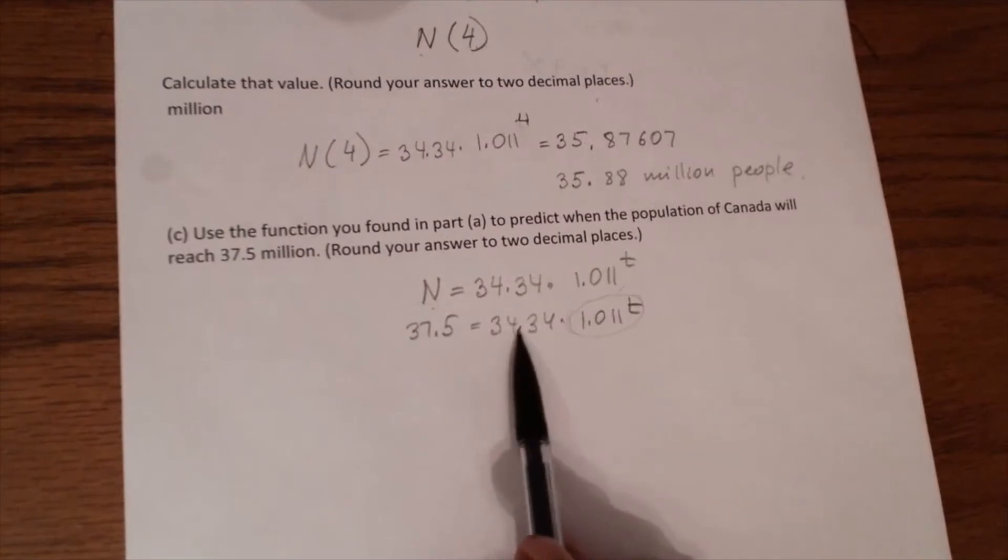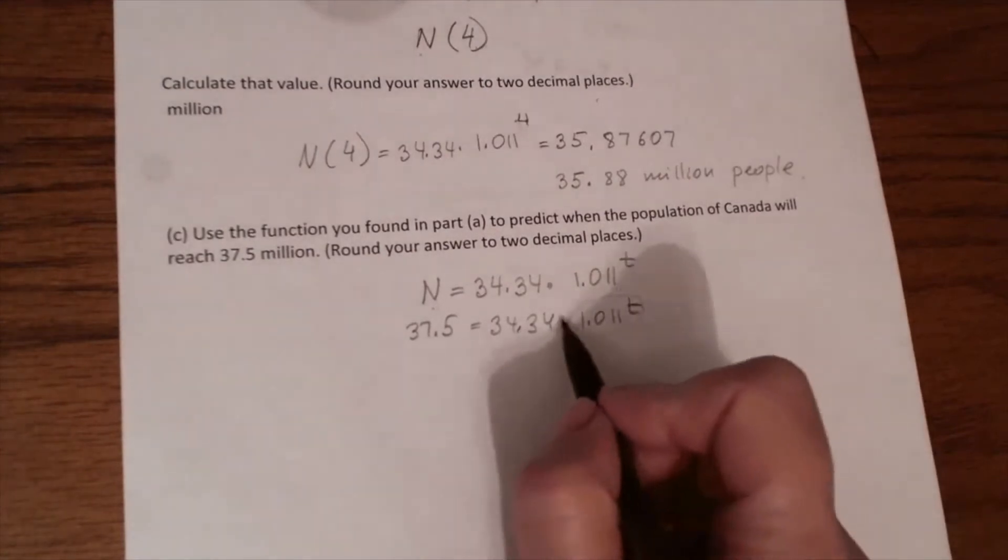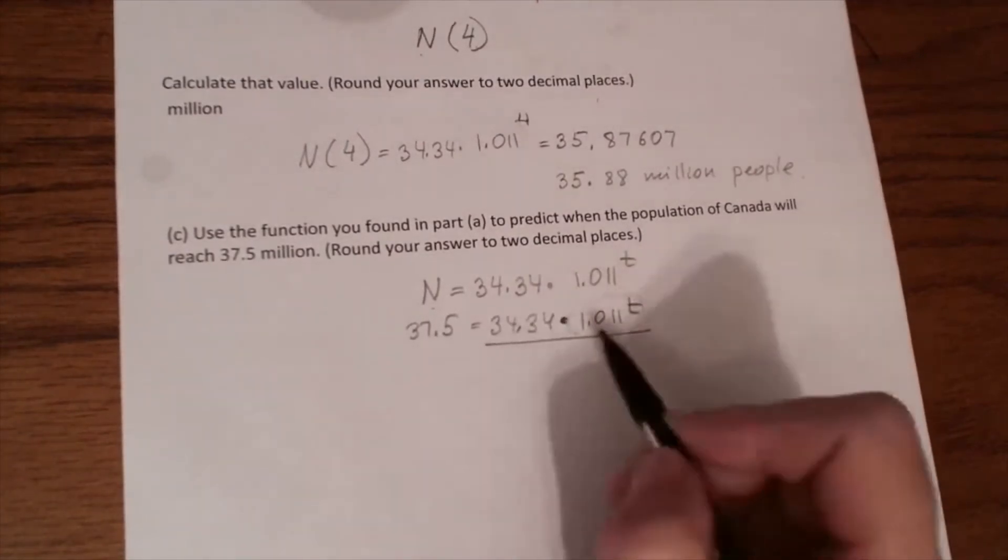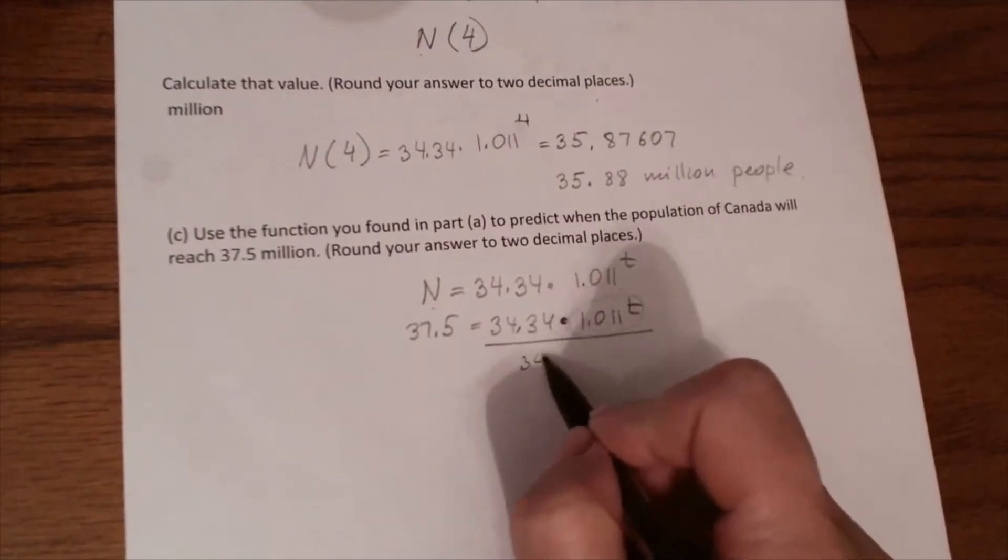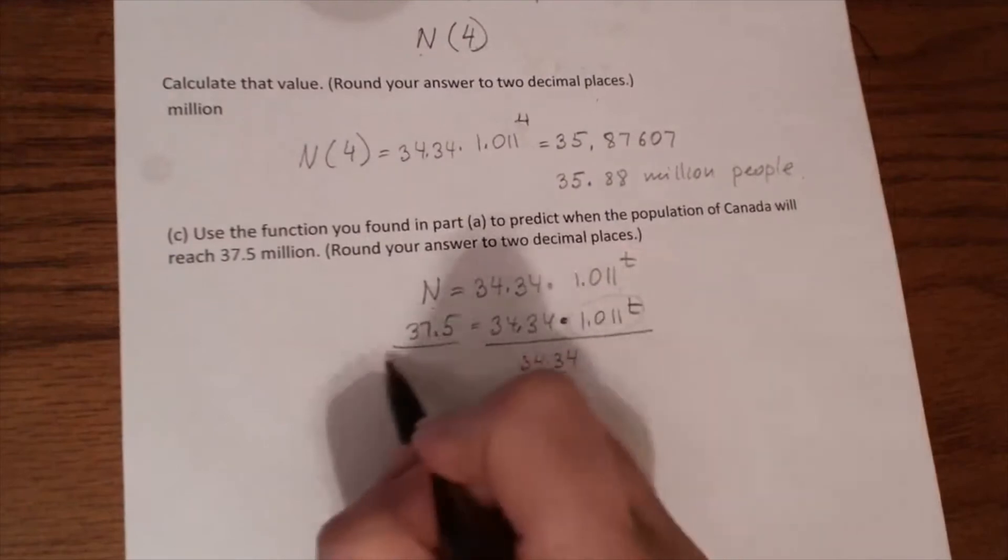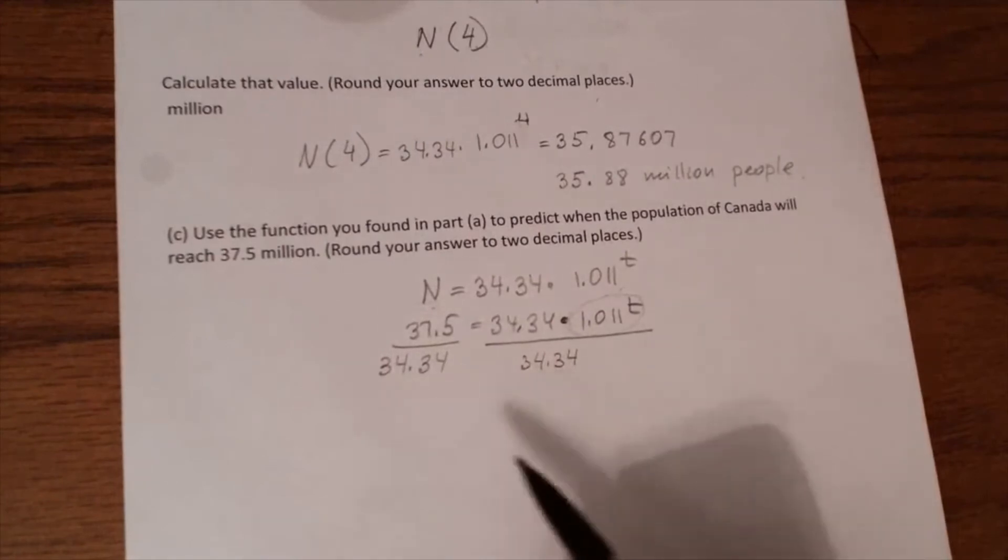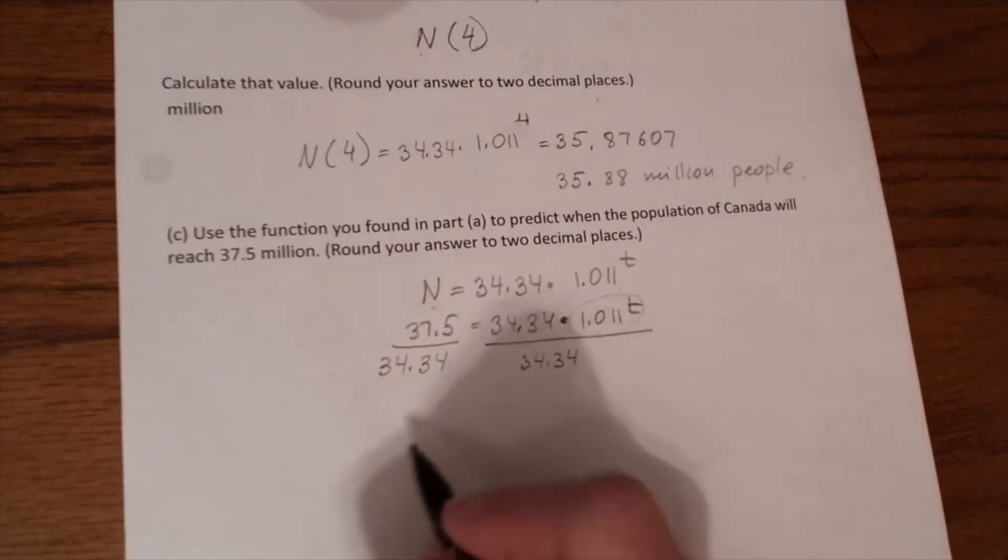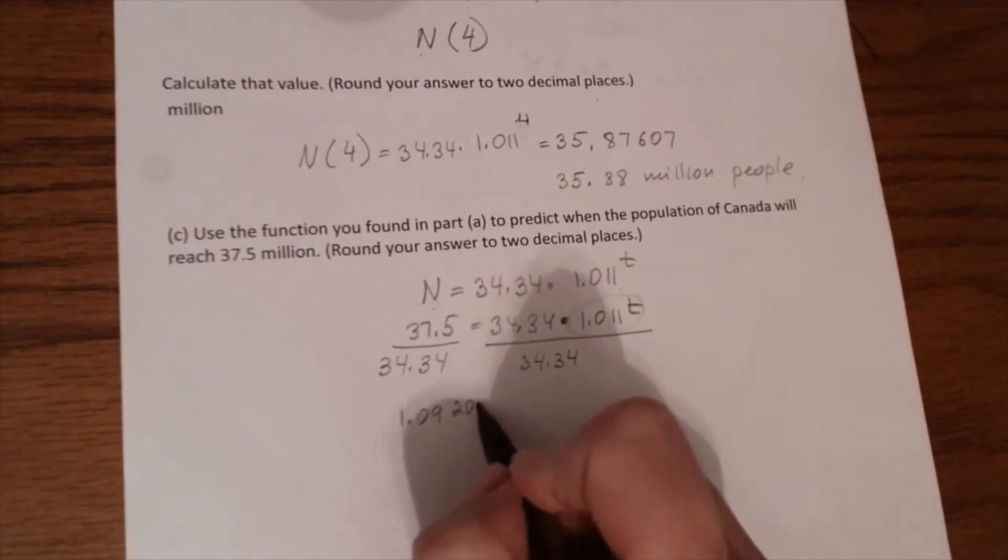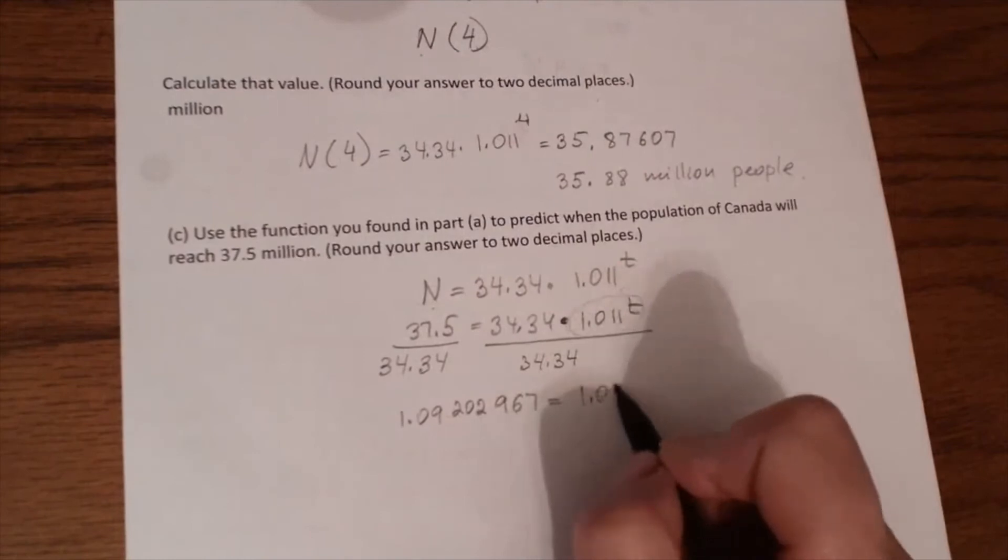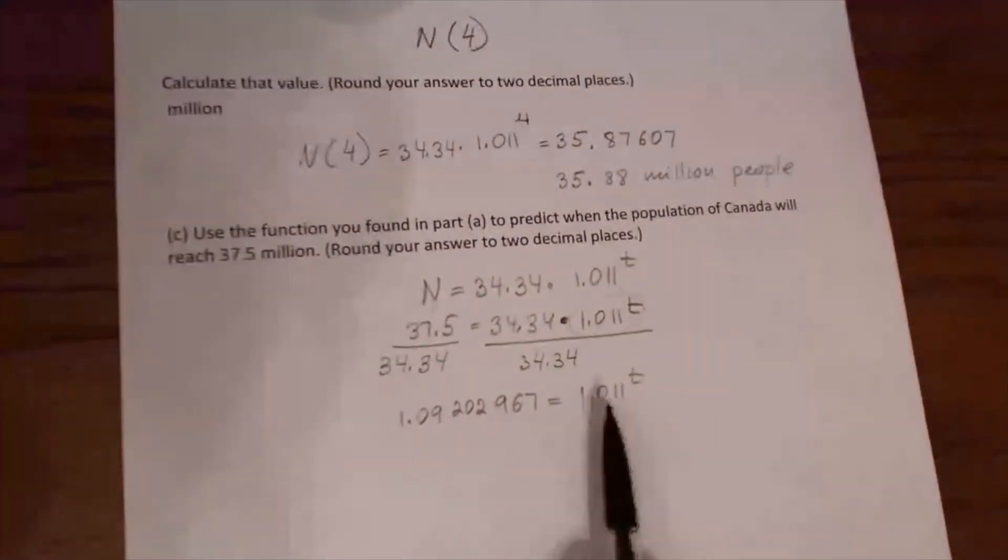So we have to get rid of this 34.34. We see that we have multiplication here, so we have to do opposite. Opposite of multiplication is division. So we have to divide both sides by 34.34. When you divide these numbers, you have to keep as many decimal places as possible so the result will be accurate.